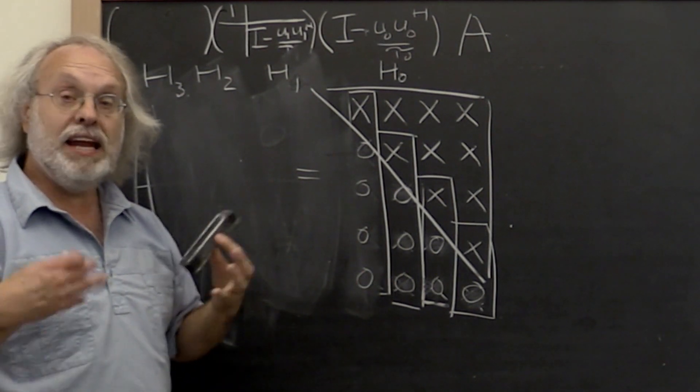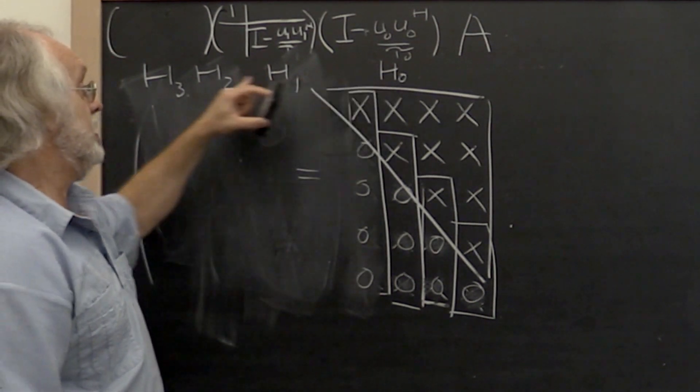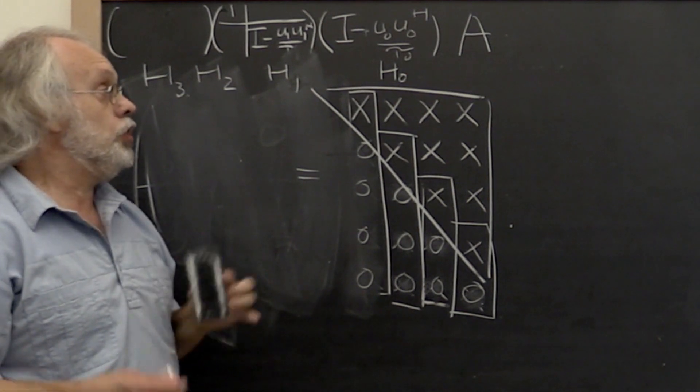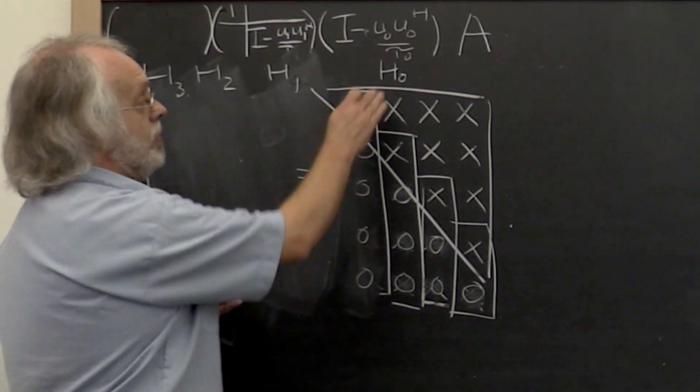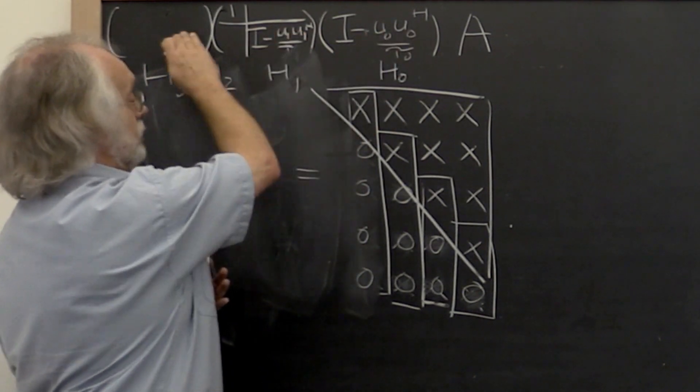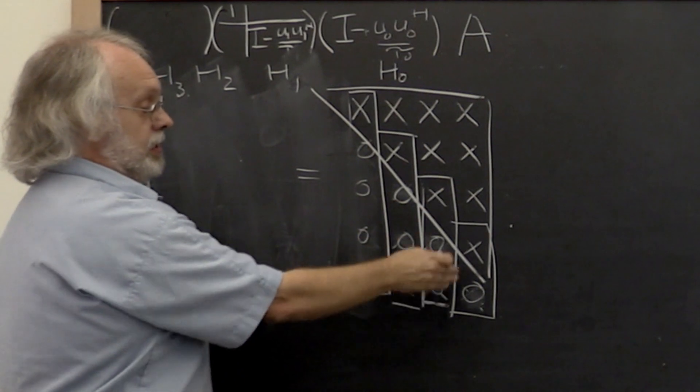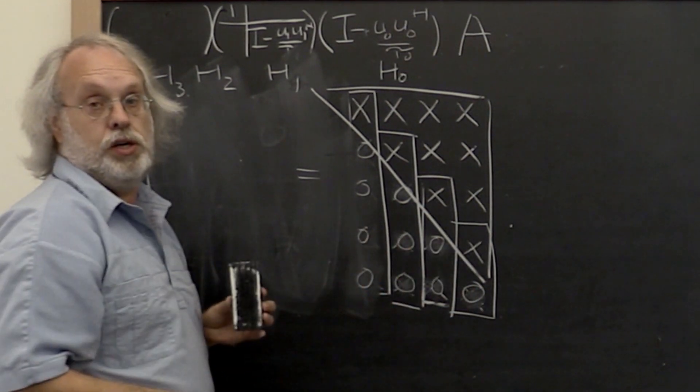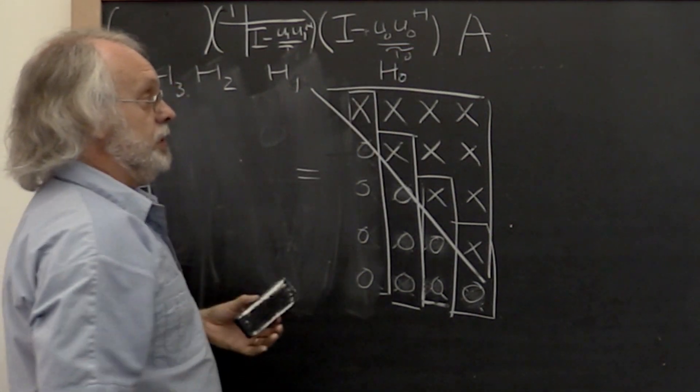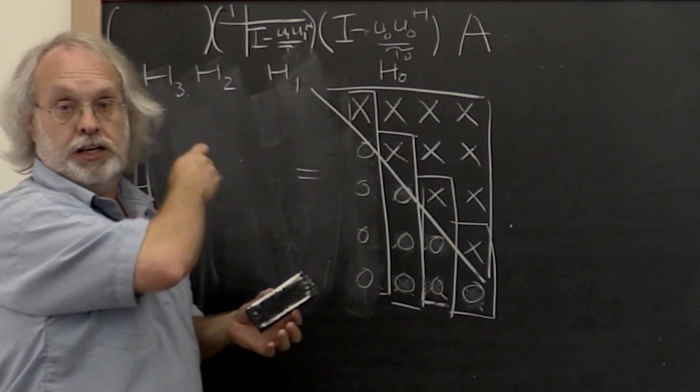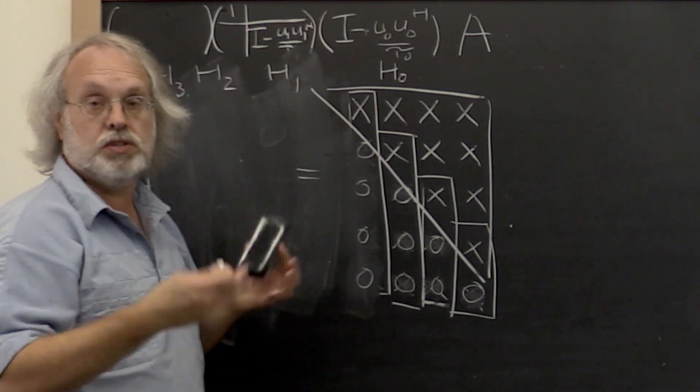Now for many of the applications that we're going to run into, it is not even necessary to form Q explicitly. It suffices to store the Householder vectors that we defined this way in the places that were zeroed out by them in the matrix so that we can later apply the Householder transformations individually as opposed to aggregating them into one unitary matrix. And we'll see that shortly.